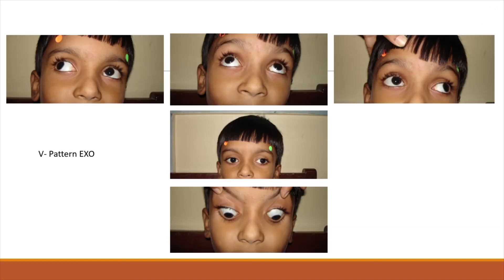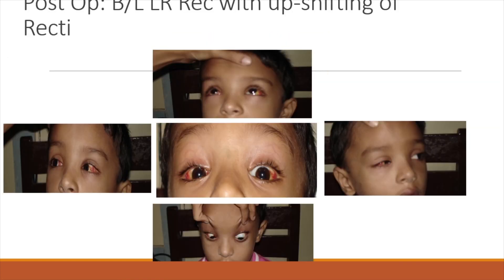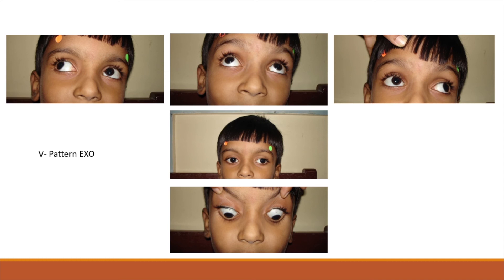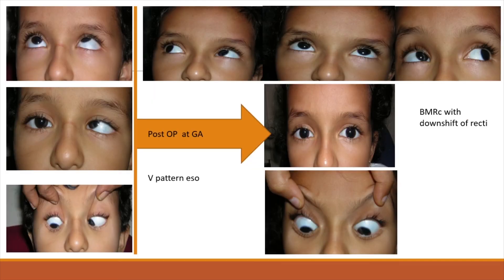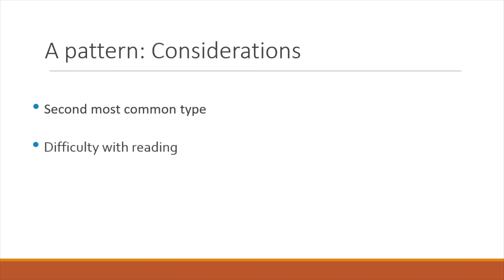This is the same boy who had V-pattern exotropia — we performed bilateral lateral rectus recession with upshifting of the recti. Now he is nicely aligned in all three positions of gaze. It is very important to notice if you have broken the pattern on the first postoperative day. Here is our child who had a V esotropia — we did a bimedial recession with downshift of the recti — and the eyes are aligned in downgaze, primary gaze, and upgaze at two years post-op.